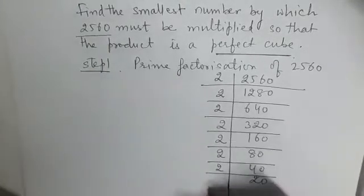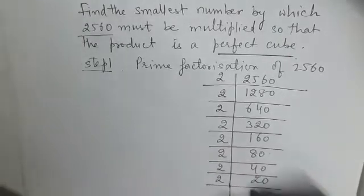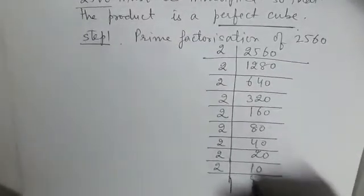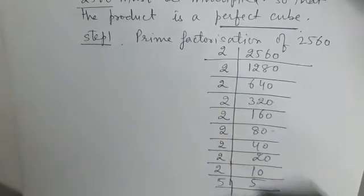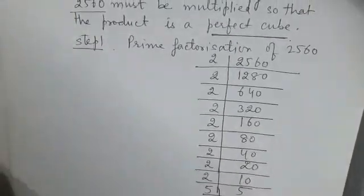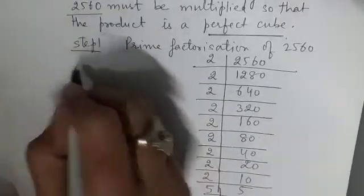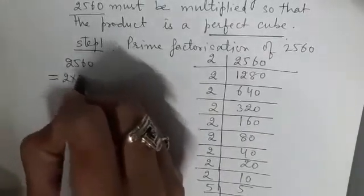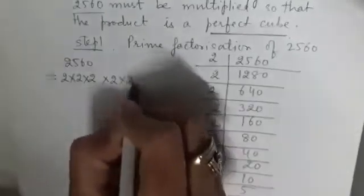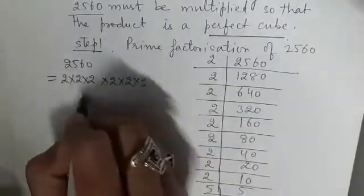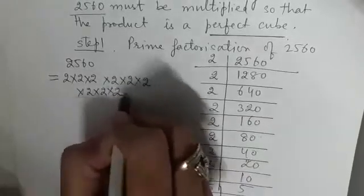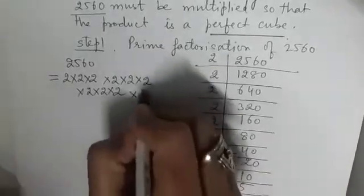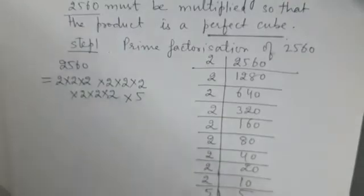Continuing: 80 is divisible by 2 giving 40, again by 2 giving 20, and again by 2 giving 5. So 2560 can be written as 2 × 2 × 2 × 2 × 2 × 2 × 2 × 2 × 2 — that is 2 to the power 9 — and then multiplied by 5.